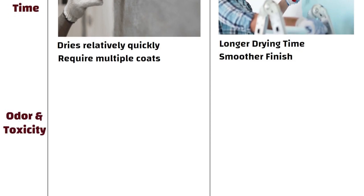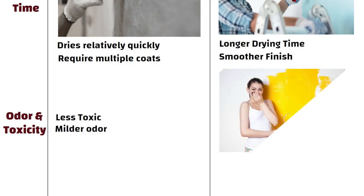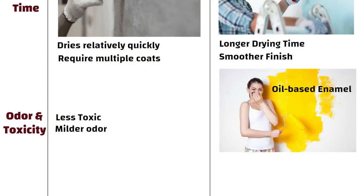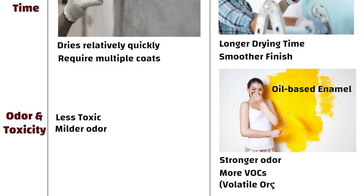Odor and Toxicity. Aluminum paint is generally considered less toxic and has a milder odor. Whereas enamel paint, especially oil-based enamel, can have a stronger odor and may contain more VOCs, i.e. volatile organic compounds.